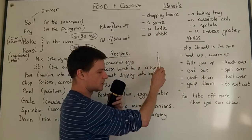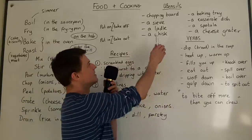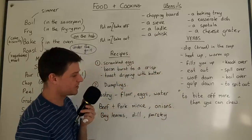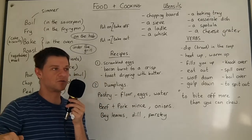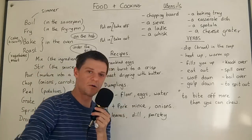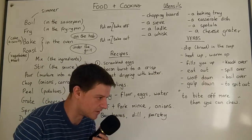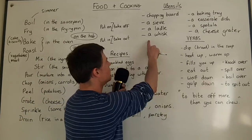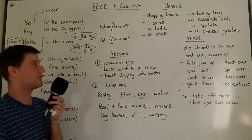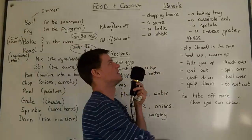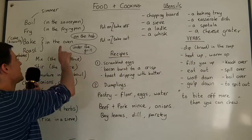Now let's look at utensils. You have a chopping board for chopping carrots or onions. You have a sieve for draining rice. You have a ladle for taking soup out of a saucepan and putting it into a bowl. You have a whisk for mixing ingredients — for example, flour and eggs for pancakes. And you have a baking tray, which is what you put in the oven.